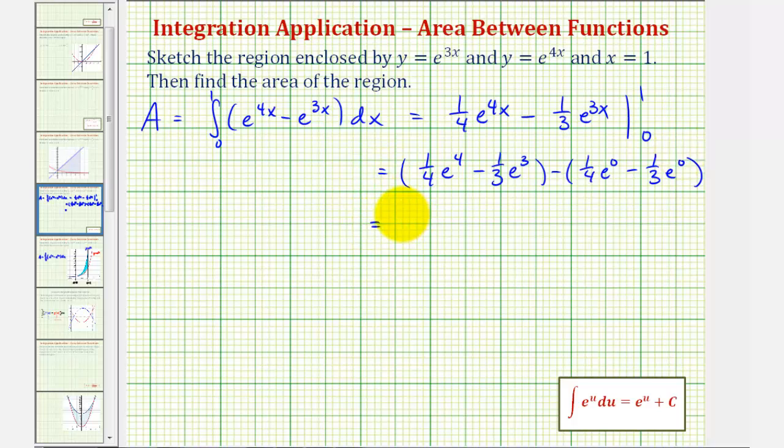So this would give us 1 fourth e to the 4th minus 1 third e to the 3rd. And then here we'll have minus 1 fourth and then plus 1 third since e to the 0 is equal to 1.